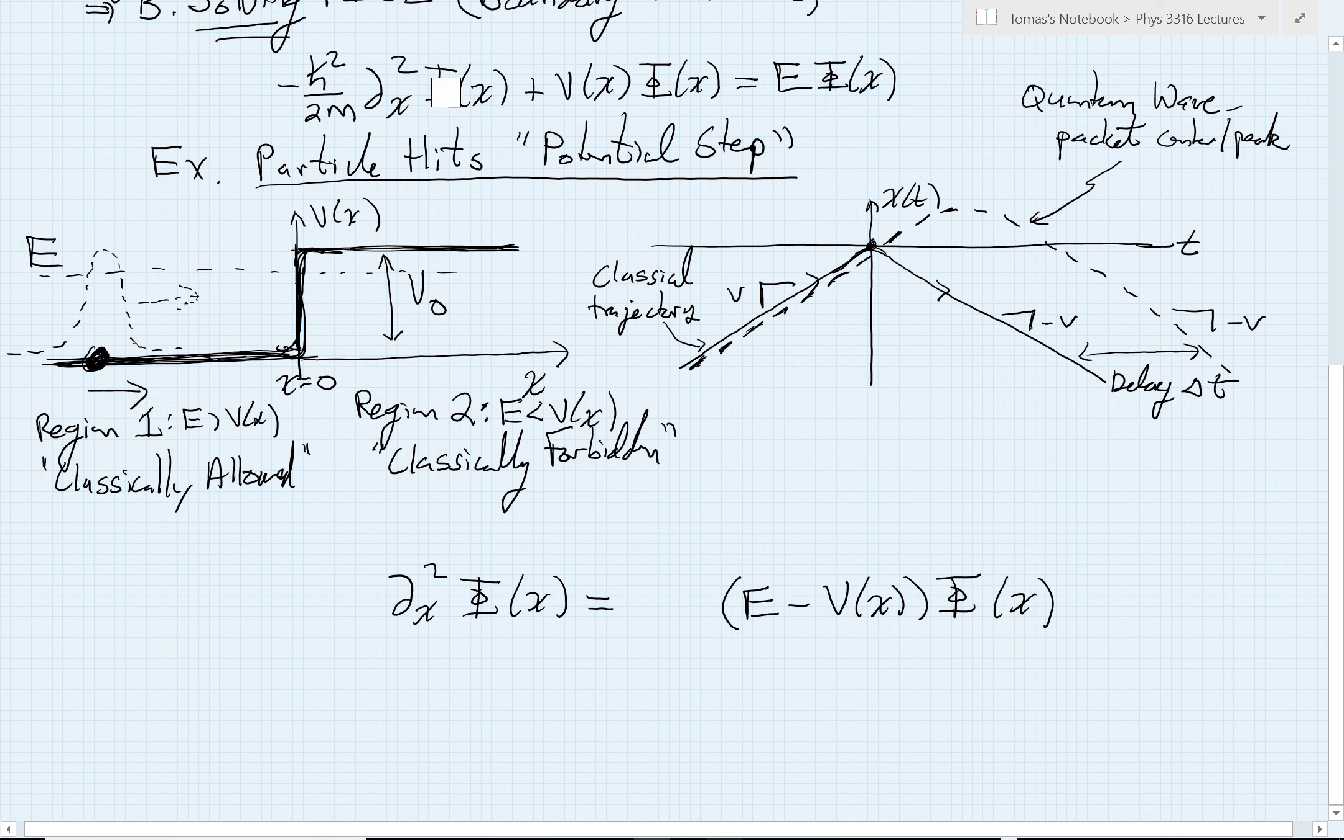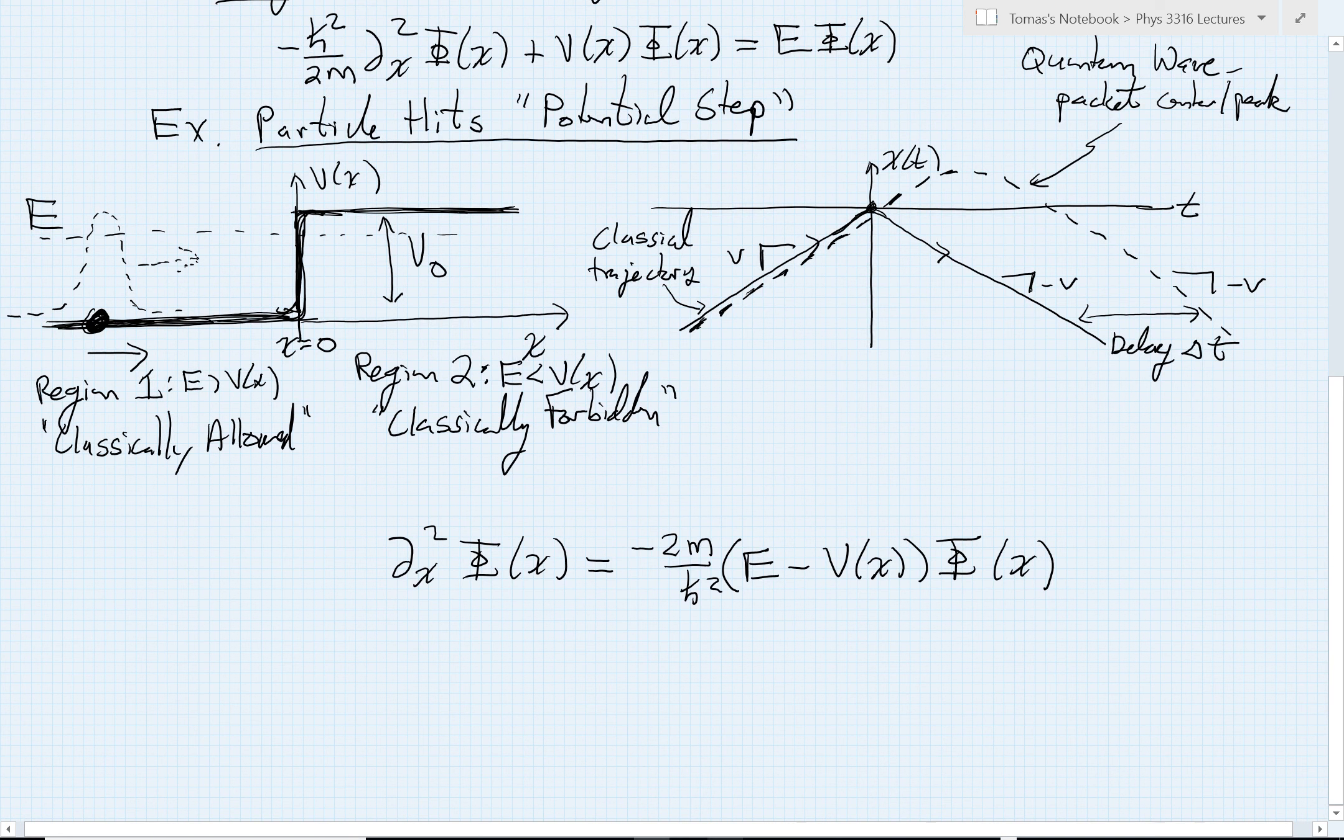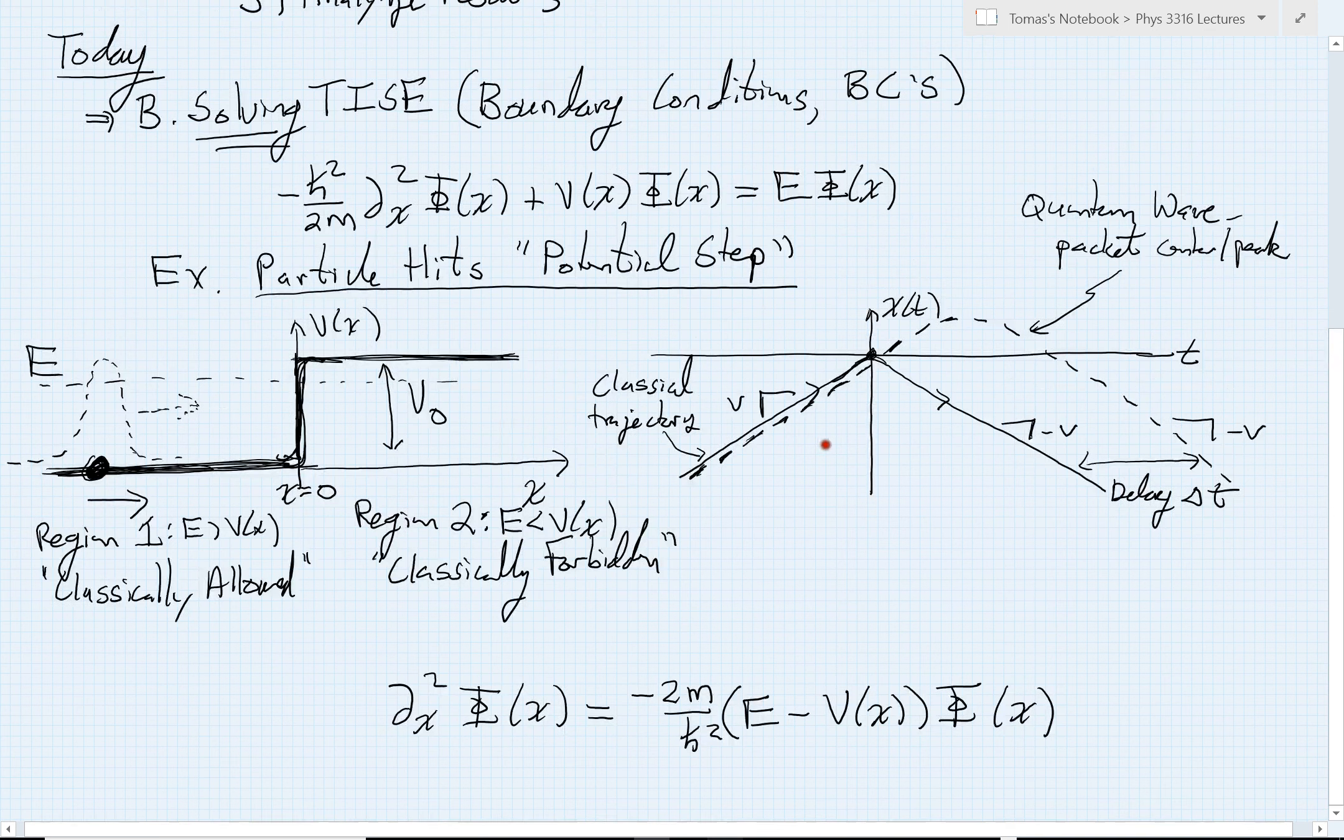To solve for the second derivative, I also had to clear this fraction. So I'm going to multiply both sides by minus 2m over h-bar squared. Just one final step consideration before we begin to consider what happens in the different regions.